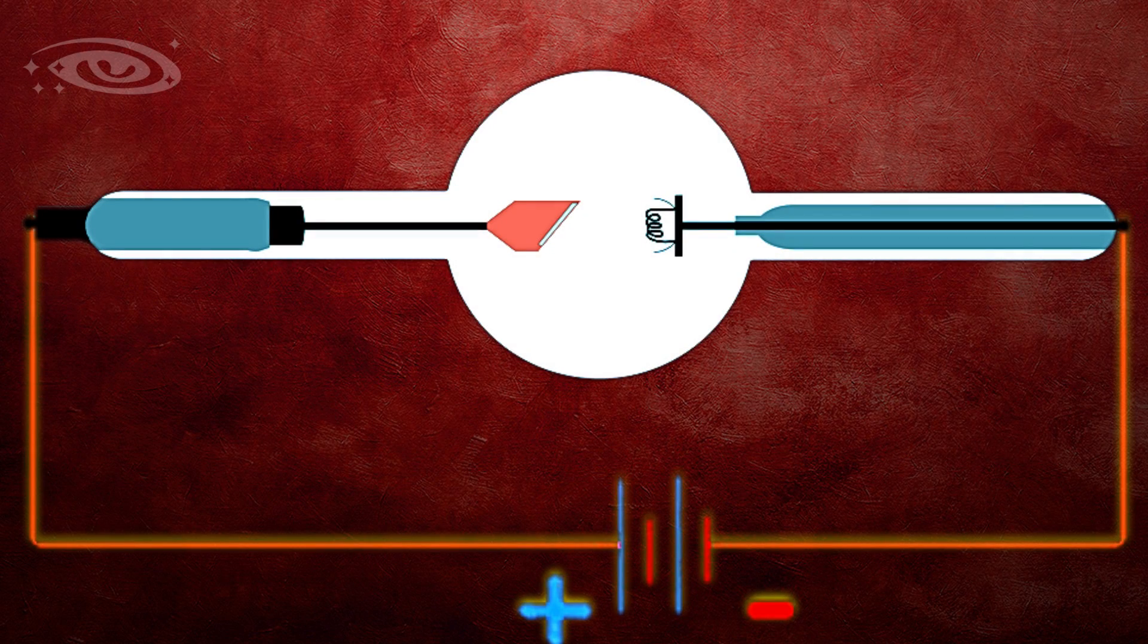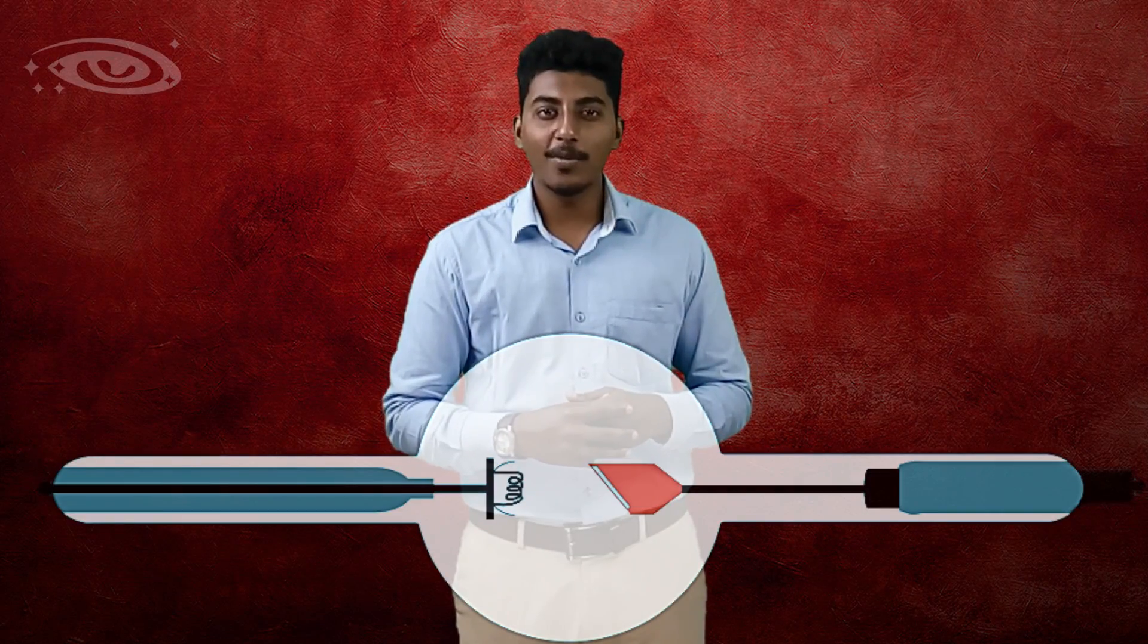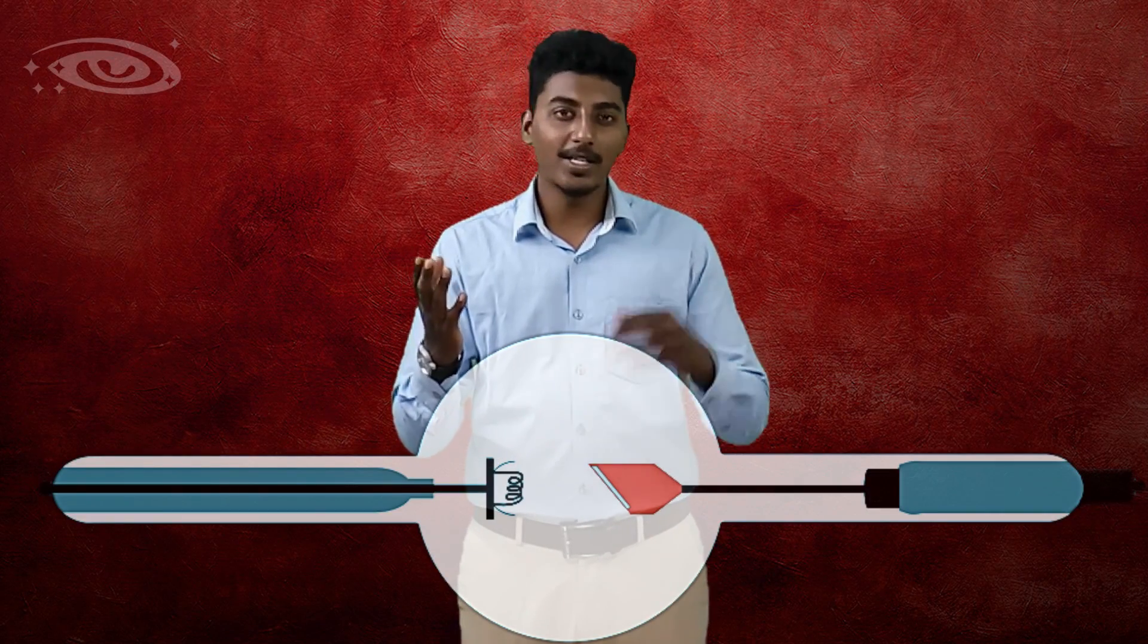Welcome, this is Gautam, welcome to Immortal Universe. As we all know, x-rays are produced when high velocity electrons strike a target metal. Do you know which metal is used in the x-ray tube? That's right, it's tungsten. Tungsten is used as a filament in the cathode side and target in the anode side.